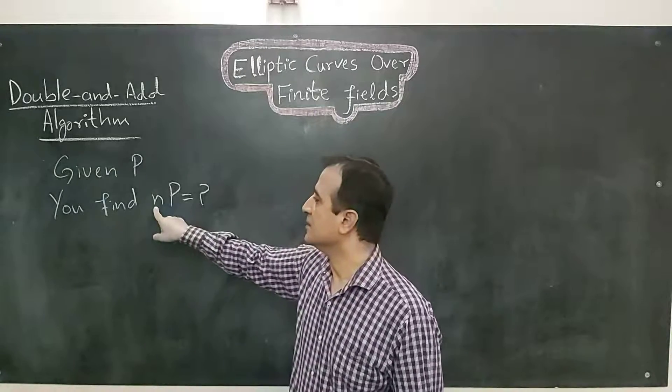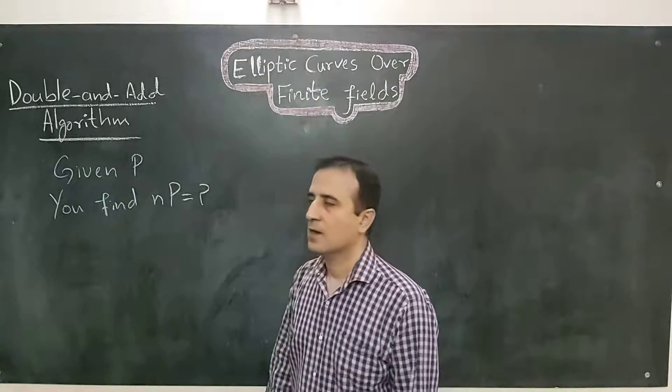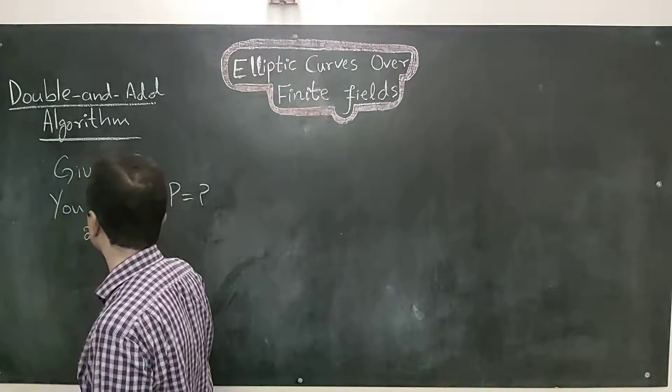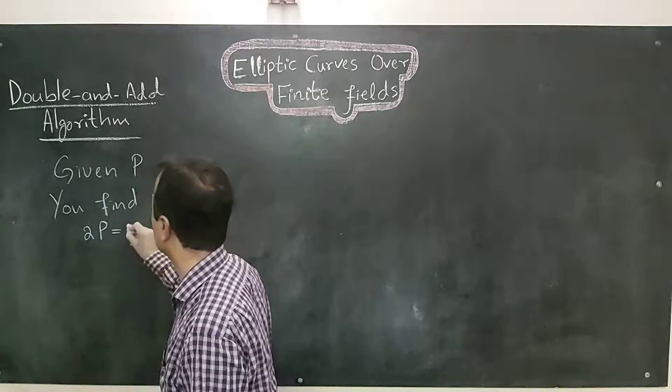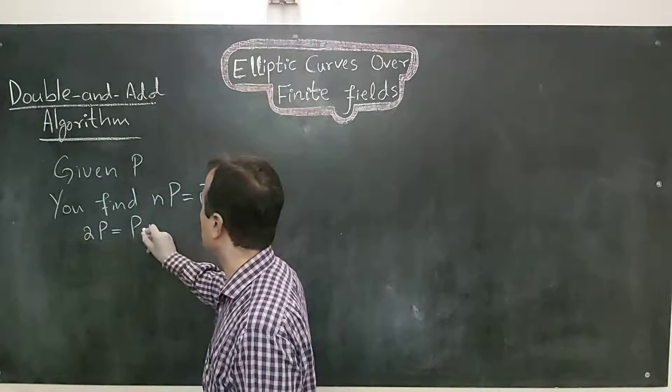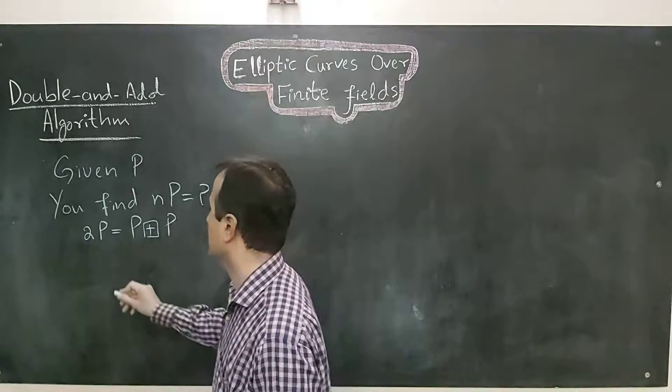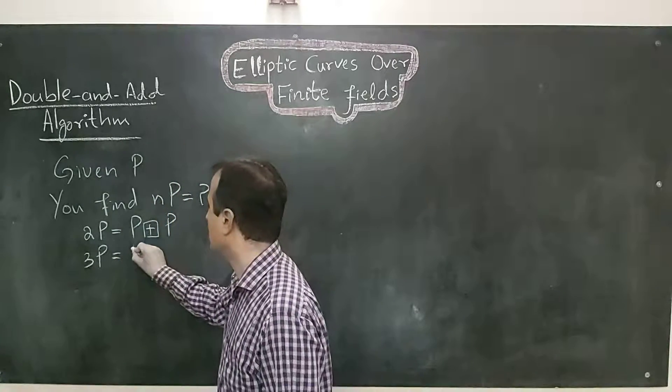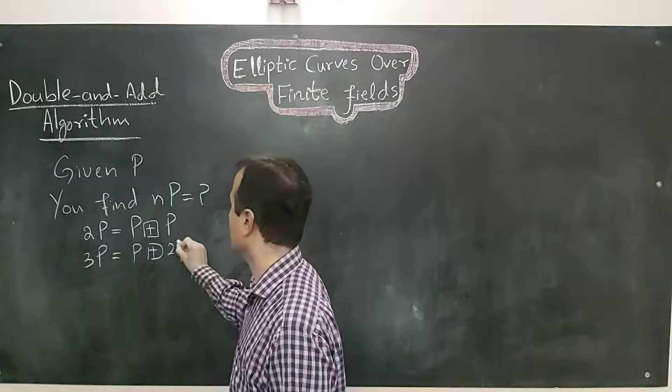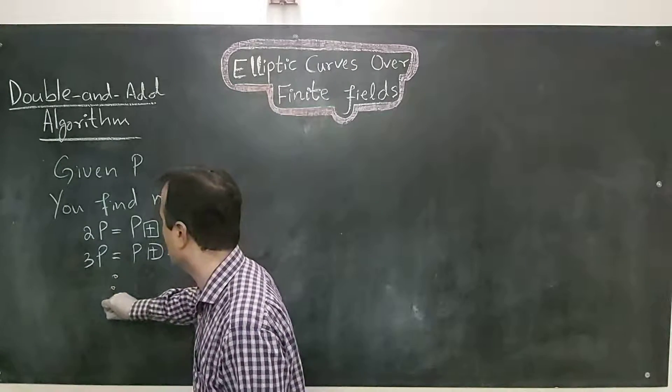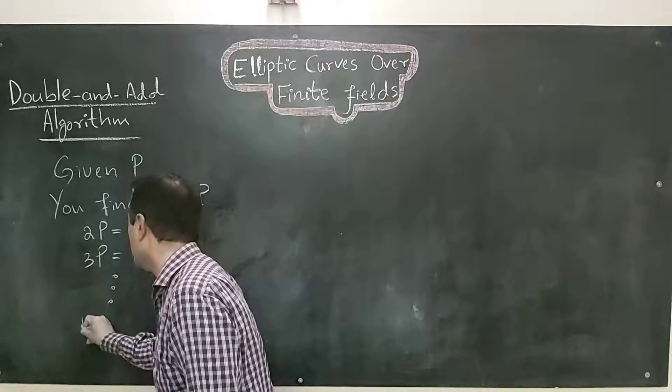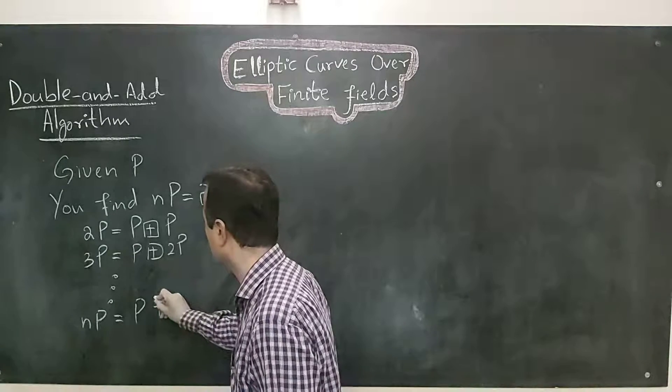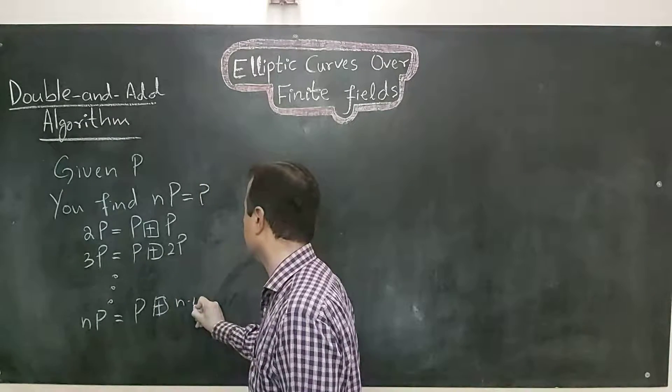Where N is an integer and P is a point on the elliptic curve. A naive algorithm will work like that. You will first compute 2P using point doubling algorithm. 2P will be equal to P plus P. Then you will compute 3P which will be equal to P plus 2P, and so on. At the end, you will compute nP which will be equal to P plus (n-1)P.